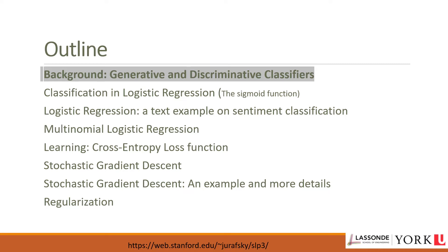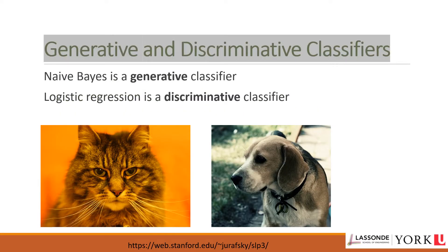We'll start by discussing the difference between generative and discriminative classifiers and the relationship between Naive Bayes and logistic regression. The most important difference is that logistic regression is a discriminative classifier while Naive Bayes is a generative classifier. Suppose we want to distinguish cat from dog images — how would we do that?